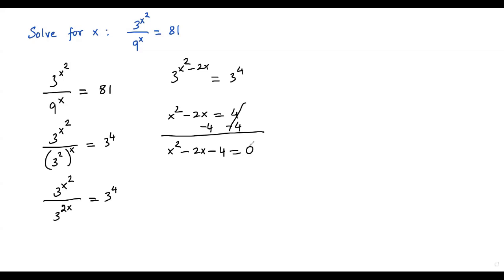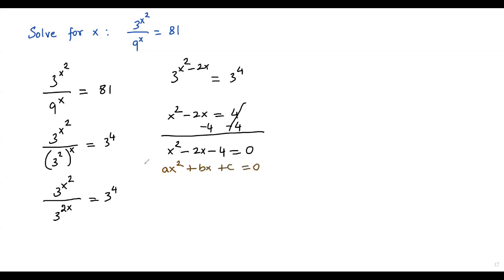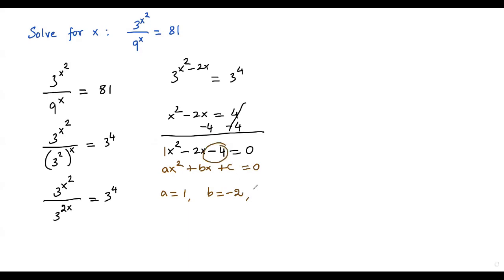This quadratic equation cannot be solved by factoring, so we use the quadratic formula. We compare it with ax squared plus bx plus c equals 0. The coefficient of x squared is 1, so a equals 1. The coefficient of x is negative 2, so b equals negative 2. The constant term is negative 4, so c equals negative 4.